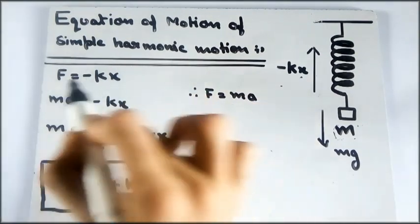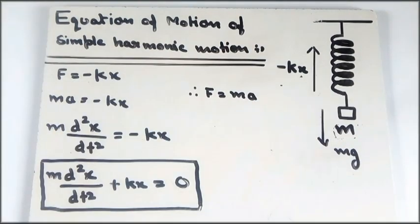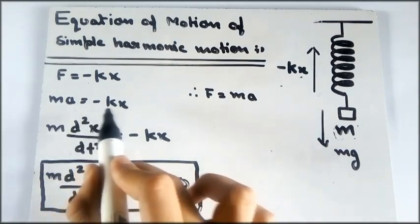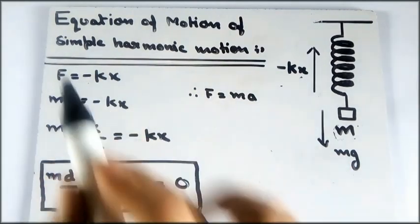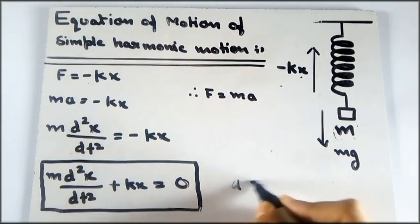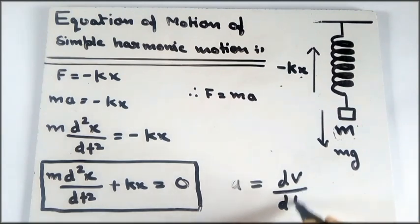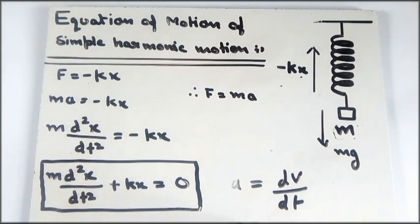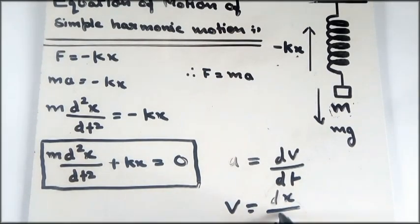The force is given by F = -kx. Applying Newton's second law, ma = -kx. Now, acceleration is the time derivative of velocity, and velocity is the time derivative of displacement.